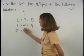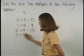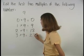Two times nine, which is eighteen, three times nine, which is twenty-seven.